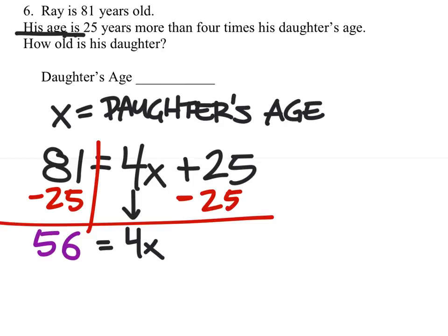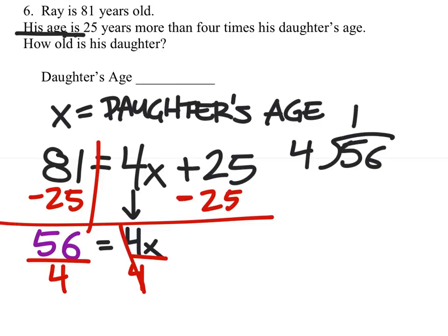Then, we'll divide everything by 4 and cancel those out. So, we've got 56 divided by 4. 4 goes into 5 once. 1 times 4 is 4. Subtract. 16. 4 goes into 16 four times. 4 times 4 is 16. They cancel. Nothing remains.